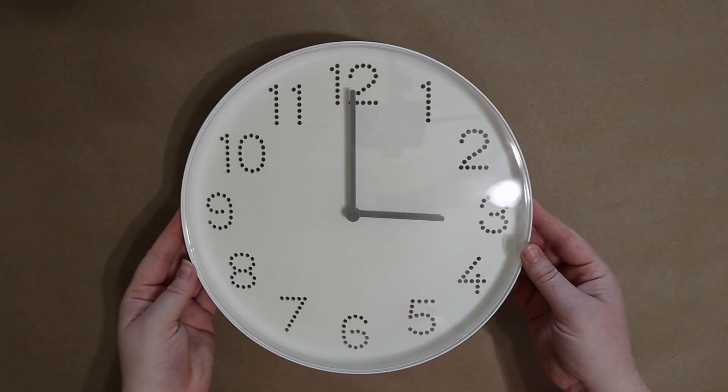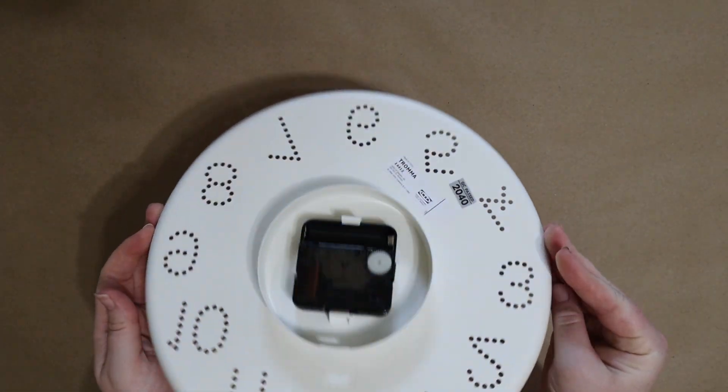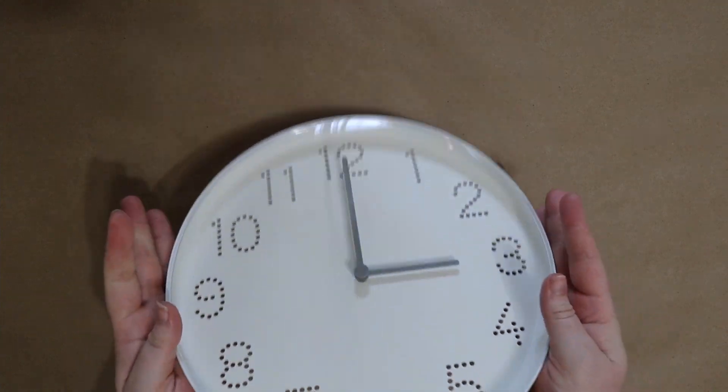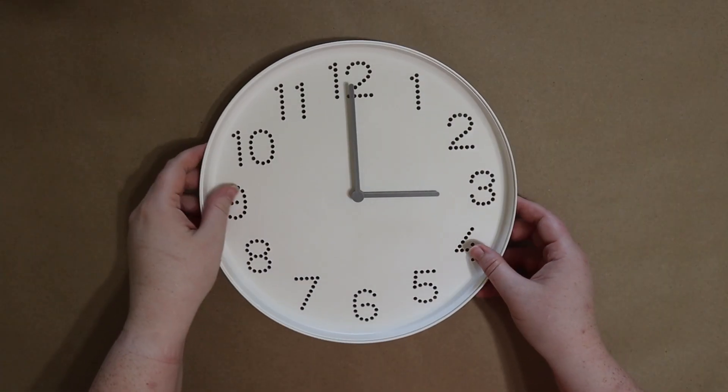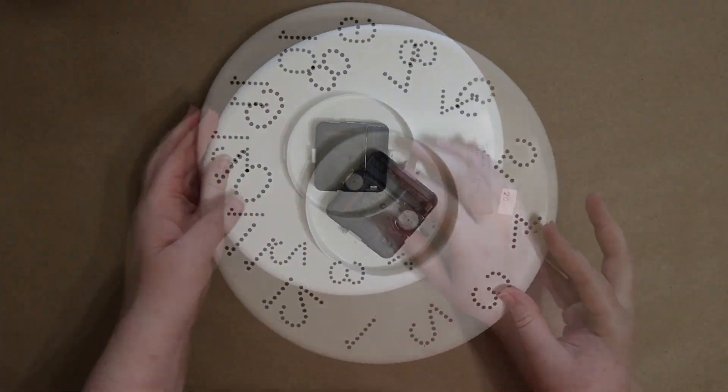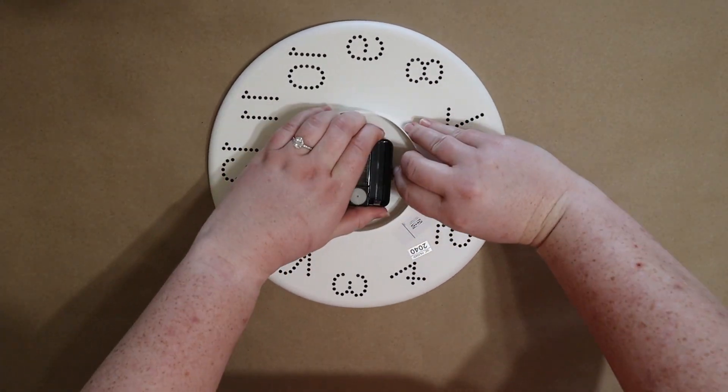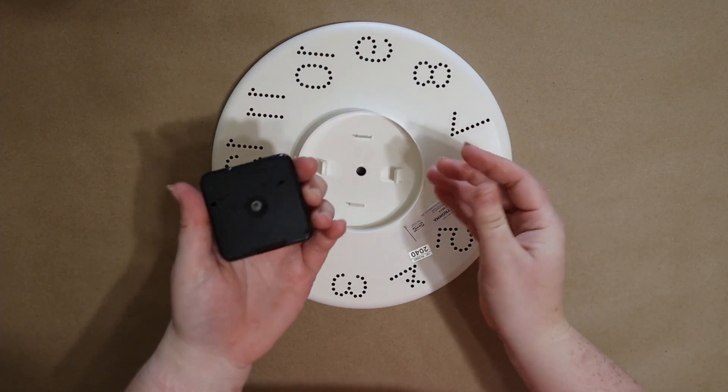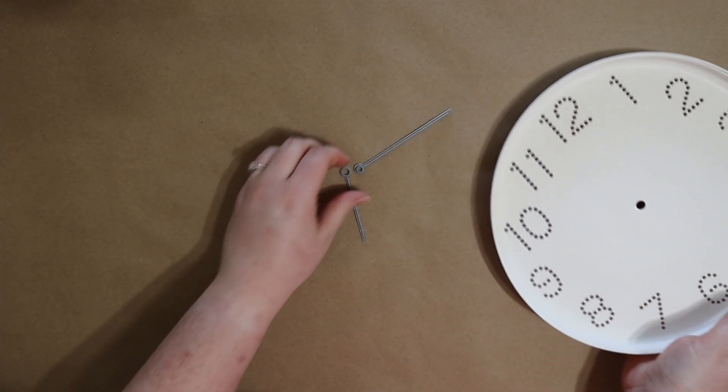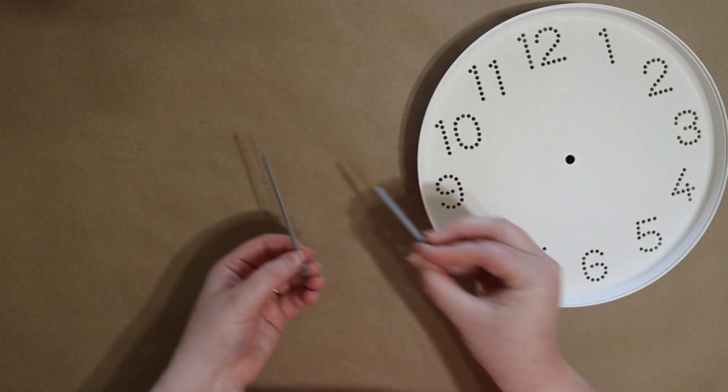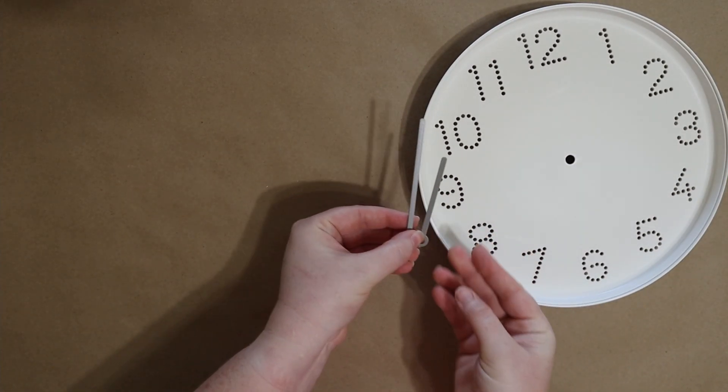So here's the $2 clock from IKEA. Our first step is to take off that shiny reflective cover, then flip it over and gently remove the battery pack. When you do that, the two hands of the clock fall loose. Pick them up, set them aside, and we'll use these later in the process.